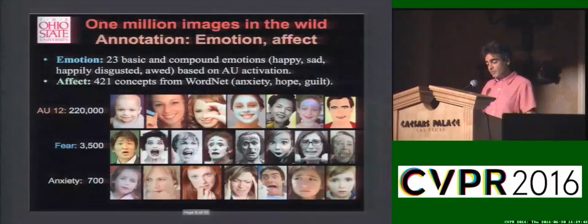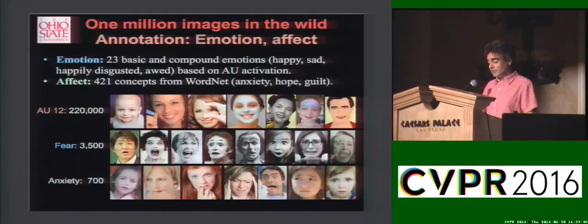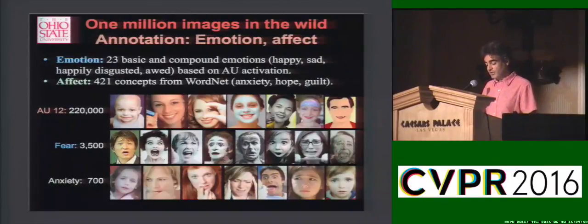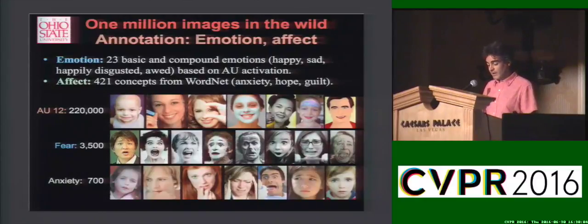We have used this system to download and automatically annotate a million images of facial expressions in the wild. Images were annotated by AU, AU intensity, as well as emotion category and affect concept. Emotion categories are defined by facial expressions with a specific set of AU activation. For example, happiness is defined when AUs 12 and 25 are active.